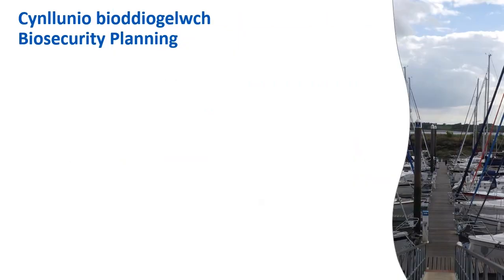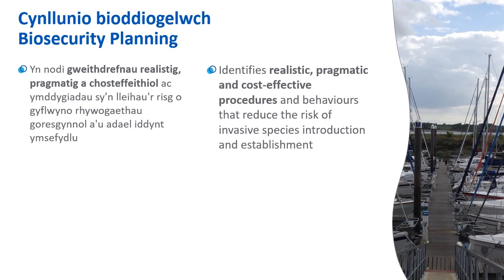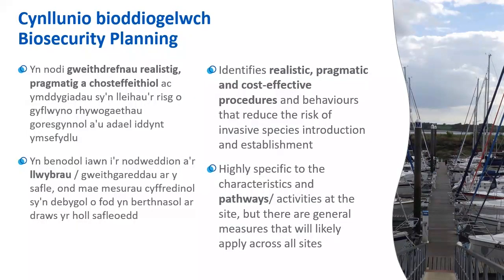Biosecurity planning involves identifying realistic, pragmatic and cost-effective actions to reduce the risk of introducing or spreading INNS or facilitating their establishment. You should identify and assess the pathways that are present and introduce relevant biosecurity actions. If you focus on preventing a specific species, you will address that species only. However, if you focus efforts on reducing the risk from a pathway, you will address all species associated with that pathway. Some actions might be highly specific to the site and the pathways at that site, but there are some general biosecurity measures that will apply across the board.